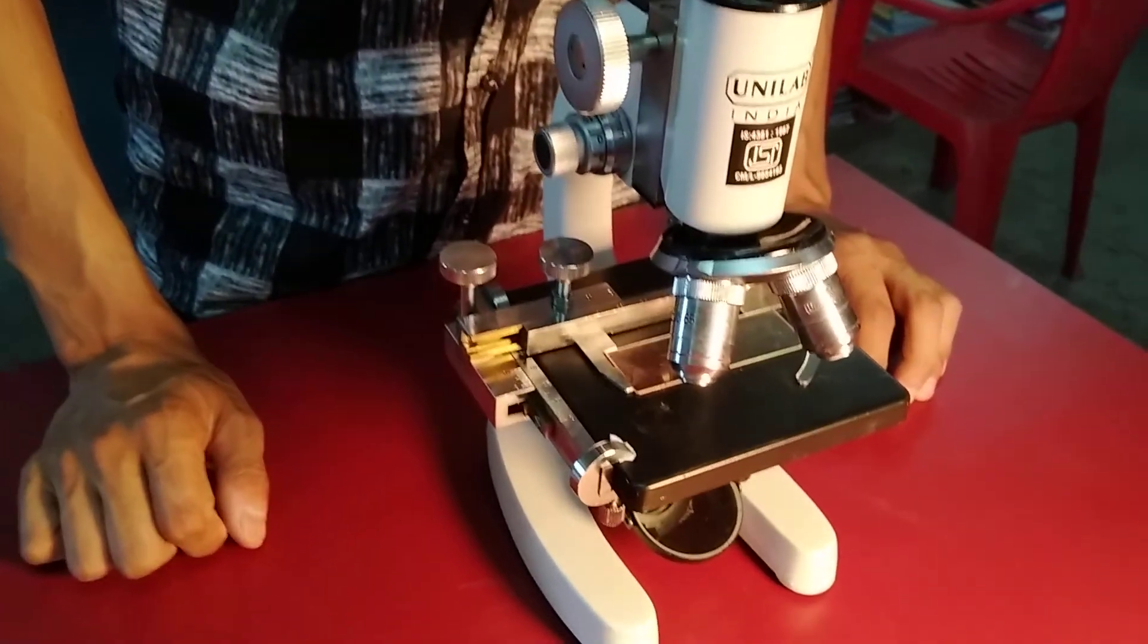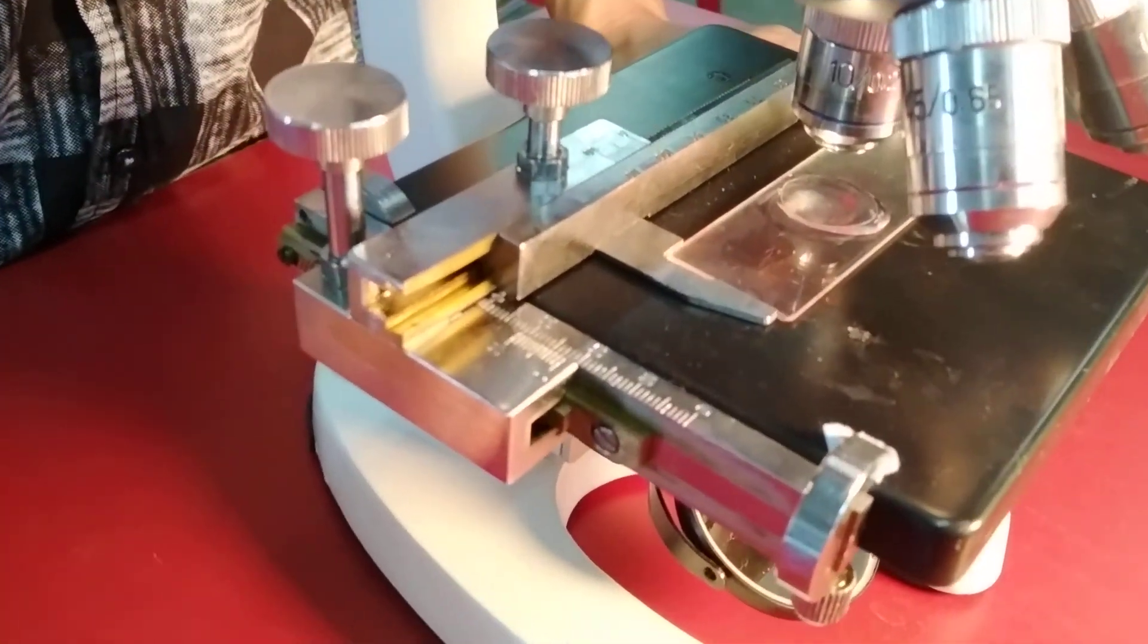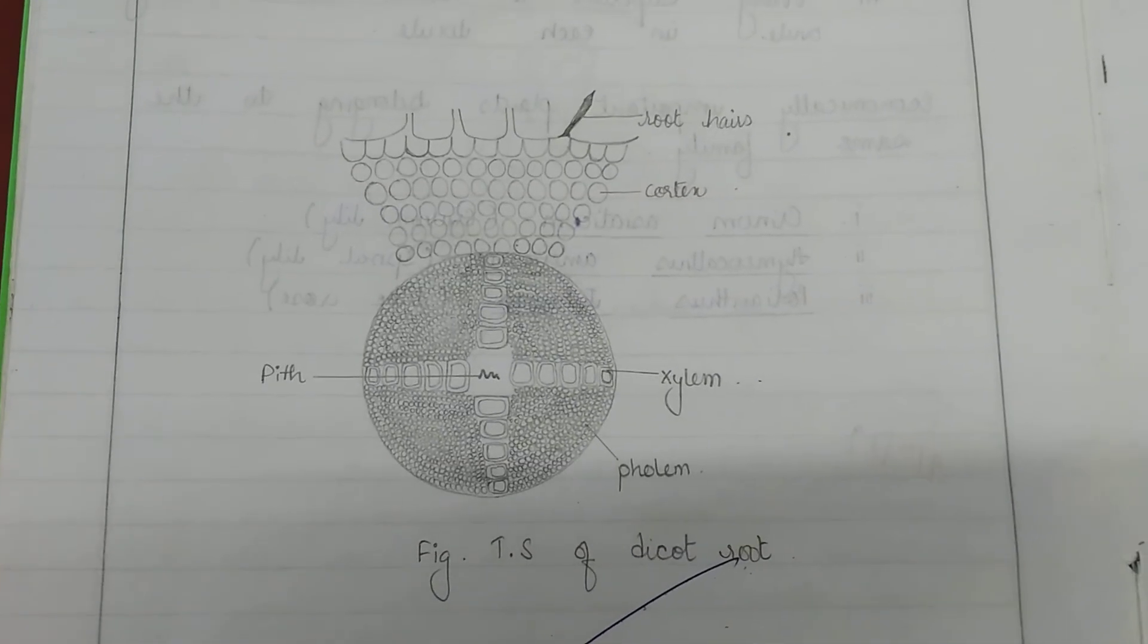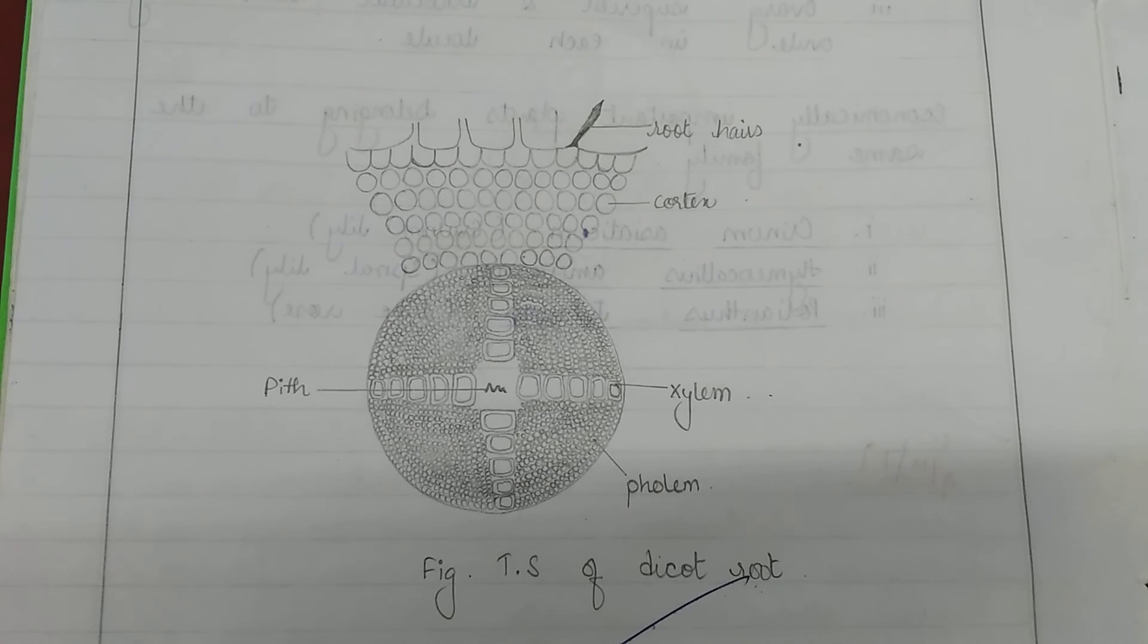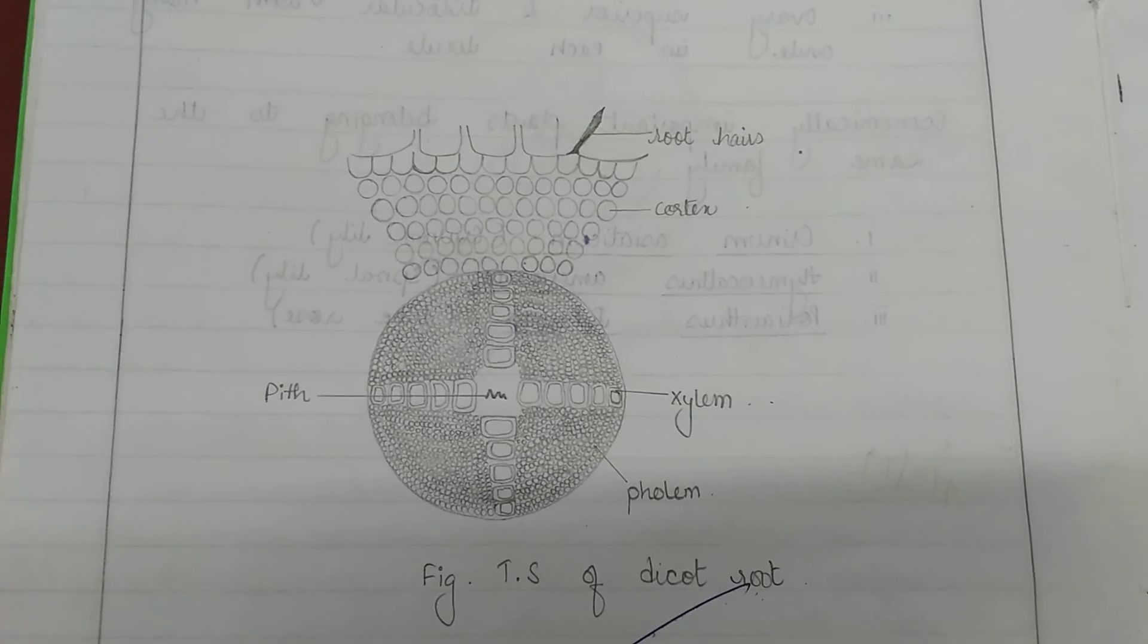After adding the cover slip, observe it under a microscope. This is what you will see under the microscope. Since the diagram is not colored, what you will actually see is a red section of the entire specimen. Thank you.